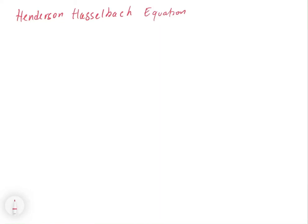In this video, we're going to look at the Henderson-Hasselbalch equation. It is a relatively simple equation derived from the Ka equation that allows us to calculate directly the pH of a buffer solution, knowing the concentration of A minus and the concentration of HA. And if you know the Ka, we can get a pH.